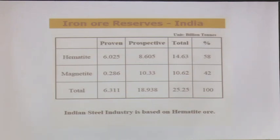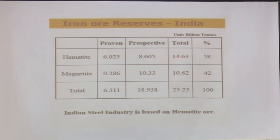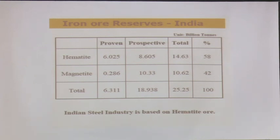So we must use iron ore in a sustainable manner, otherwise the iron ore reserves will also deplete. The proven hematite reserve is 6.025 billion tons and the prospective is another 8.6, giving around 14.63 billion tons. Magnetite prospective is 10.33 billion tons but proven is only 0.286 billion tons. Our steel industry wants hematite ore for blast furnace operations, so the major concentration is on hematite iron ore till today.